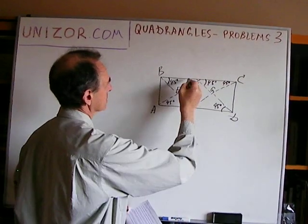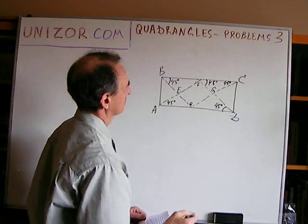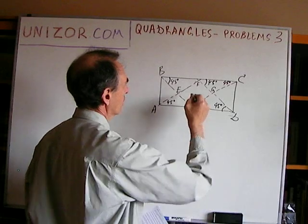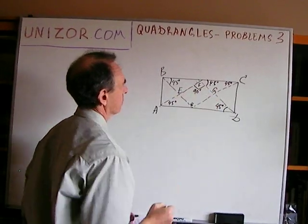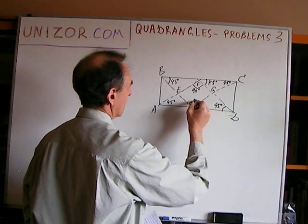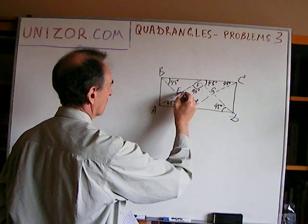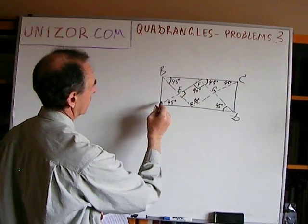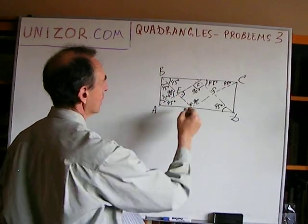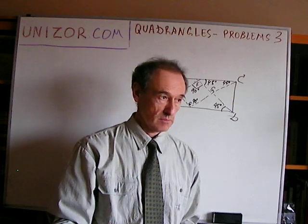Considering triangle AFD: it has two angles equal to 45 degrees, which leaves the remaining angle as 90 degrees. The same reasoning applies to triangle BGC and triangle BEA — each has 45 and 45, so the vertex angle is 90. These 90-degree angles are vertical to the interior angles of our quadrangle, so all interior angles are 90 degrees. That makes it a rectangle. But since all bisectors produce equal lengths, it's also a rhombus — a rectangle that is a rhombus is a square.